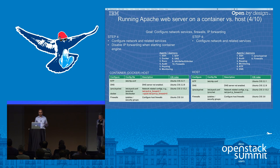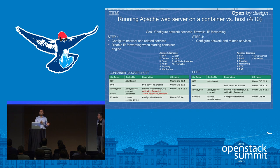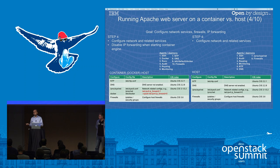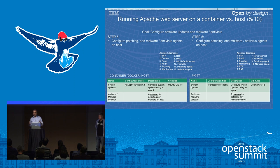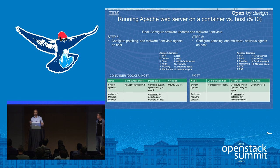Step four covers configuring network services like NTP, firewalls, and DNS. One key difference between running Apache inside a container and running it directly on the host is IP forwarding. The Center for Internet Security guidelines require that IP forwarding be disabled on a host, and that's easy to do. But when running a container engine like Docker or Rocket, IP forwarding on the host must be enabled for the default networking to work. However, one can disable IP forwarding inside the container itself by configuring the Docker engine or by passing appropriate parameters.